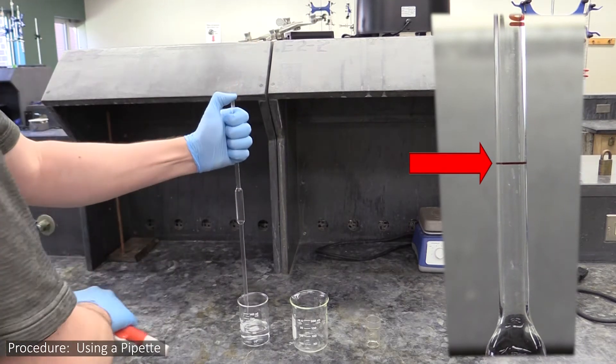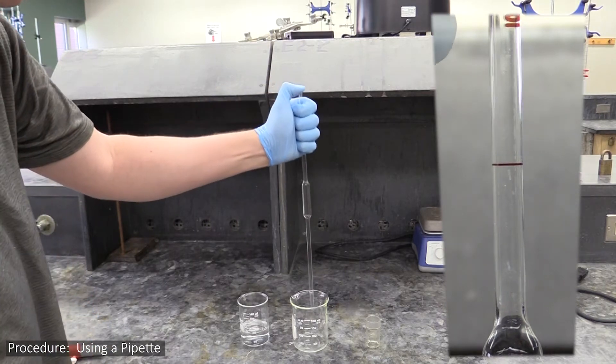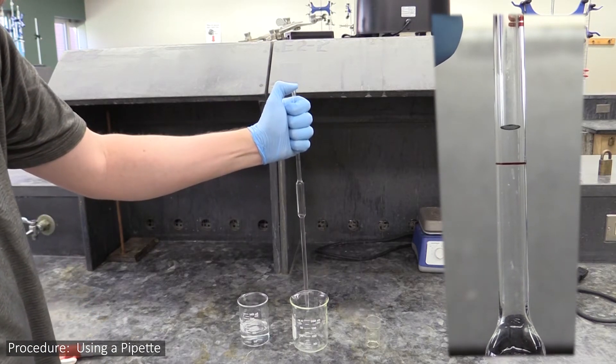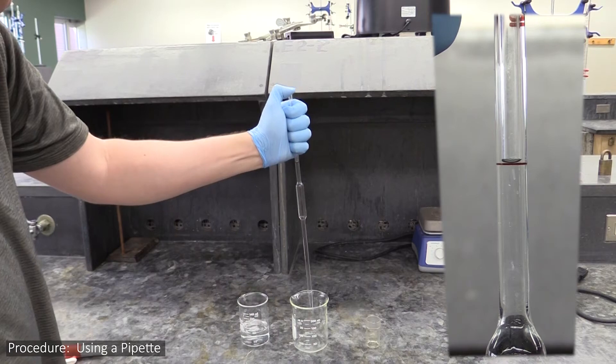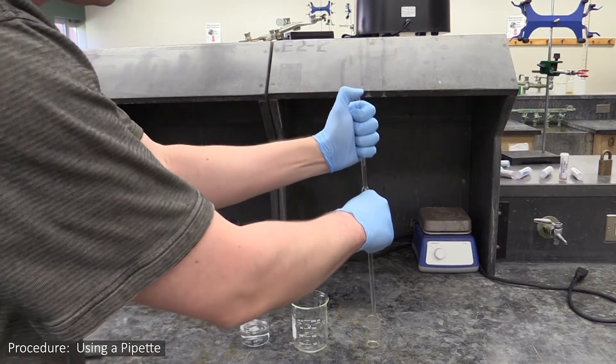Then take the pump off and use your thumb or finger to hold the liquid up. While it's over a waste container, let it drain down to the line. Then let it gravity drain into the bottle.